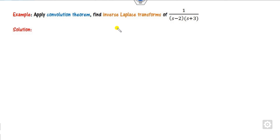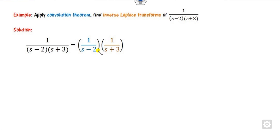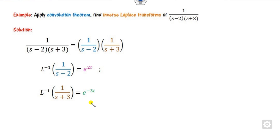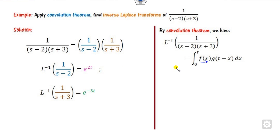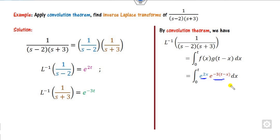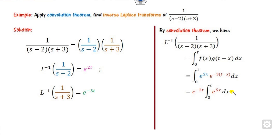Example 2: Again identify the product of two functions. The Laplace inverse of the first part is e^(2t), and the Laplace inverse of the second part is e^(−3t). Take f(t) = e^(2t) and g(t) = e^(−3t). Applying convolution: f(x) = e^(2x), and factoring e^(−3t) out, the remaining integrand becomes e^(5x). Solving the integration gives the required answer.